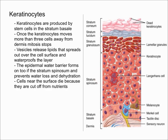This water barrier cuts off nutrients to the cells above — the stratum corneum and all the layers up there. As a result, the cells above the epidermal water barrier die because they are cut off from nutrients. This barrier consists of lipids and has tight junctions between the keratinocytes, as well as a thick layer of insoluble protein on the inner surface of the keratinocyte's plasma membrane.